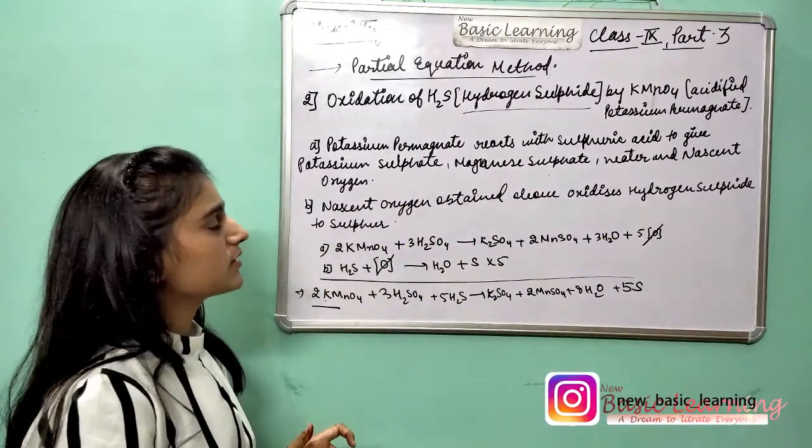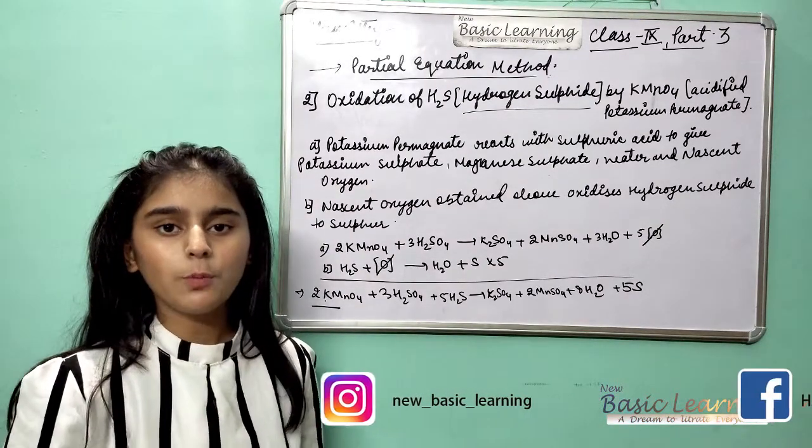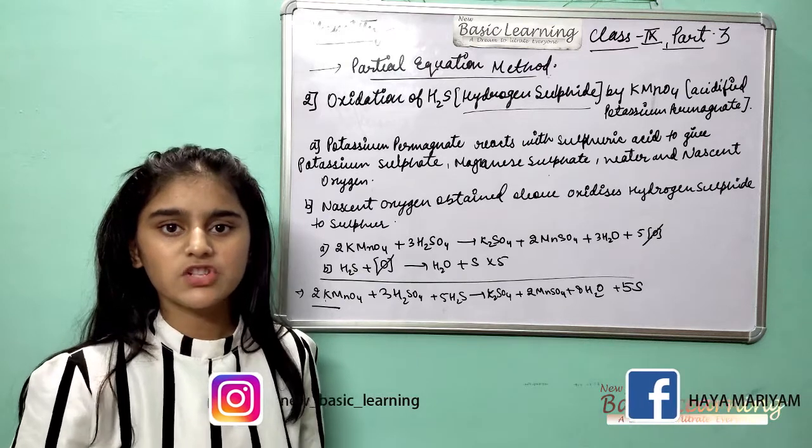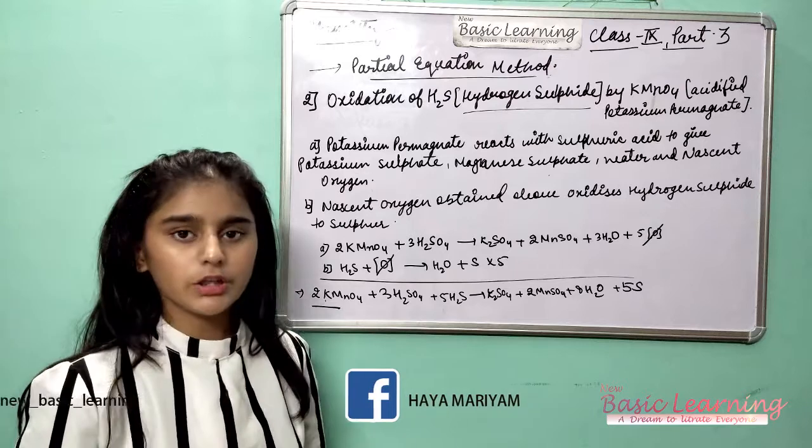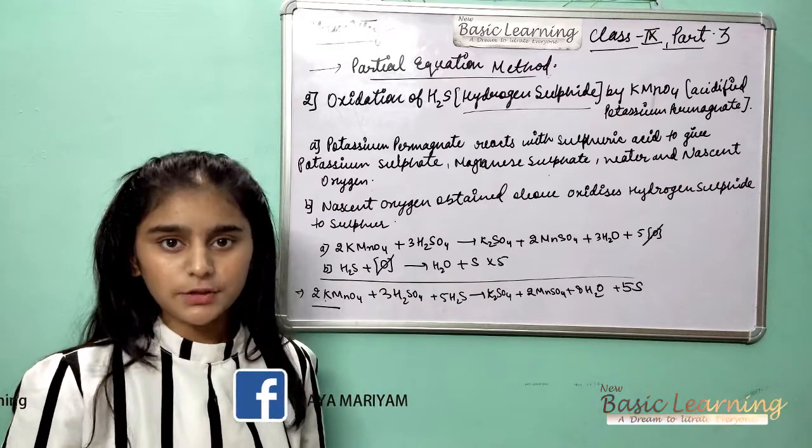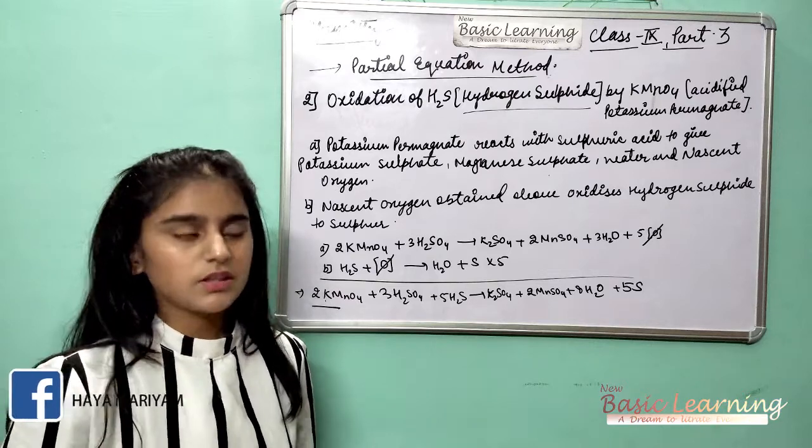So this was the second example about the partial equation method. Now I hope you can do the partial equation method very easily. You have understood all the things properly. The two examples which I taught you here are very much clear to you. If it is not clear to you, then you can ask me in the comment section.